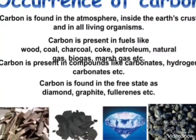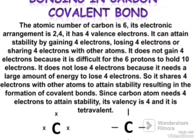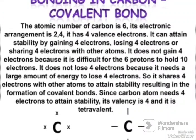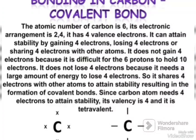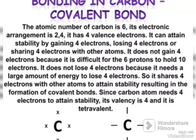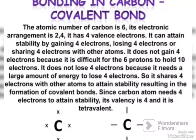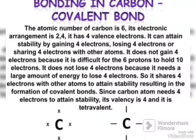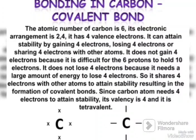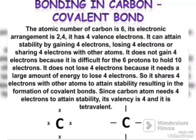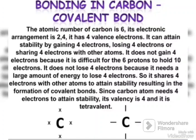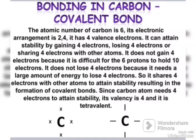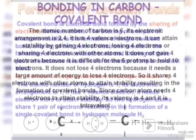Carbon is found in the free state as diamond, graphite, fullerene, etc. When it comes to bonding in carbon, a covalent bond is present. The atomic number of carbon is 6 and its electronic configuration is 2, 4. It has 4 valence electrons. It can attain stability by gaining, losing, or sharing 4 electrons with other atoms. It does not gain 4 electrons because it is difficult for 6 protons to hold 10 electrons. Since the carbon atom needs 4 electrons to gain stability, its valence is 4.